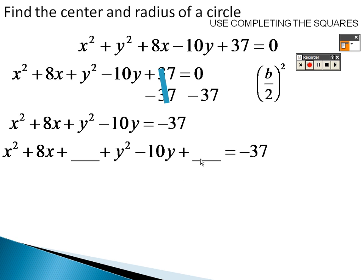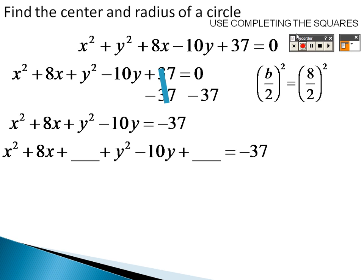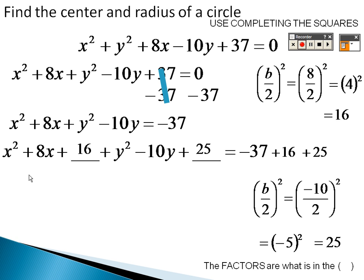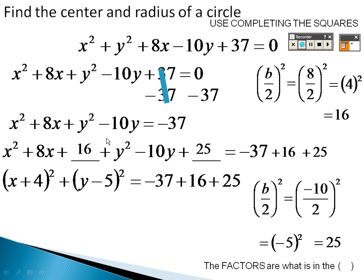Using the formula (b/2)², for the x group: 8 divided by 2 is 4, squared is 16 — add 16 to both sides. For the y group: negative 10 divided by 2 is negative 5, squared is 25 — add 25 to both sides. Factor each group: x group factors as (x + 4)², y group factors as (y − 5)², and the right side adds up to 4.